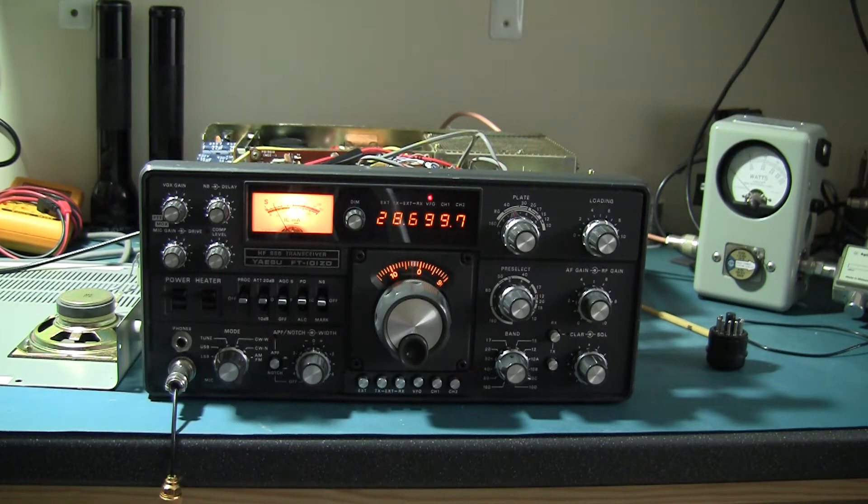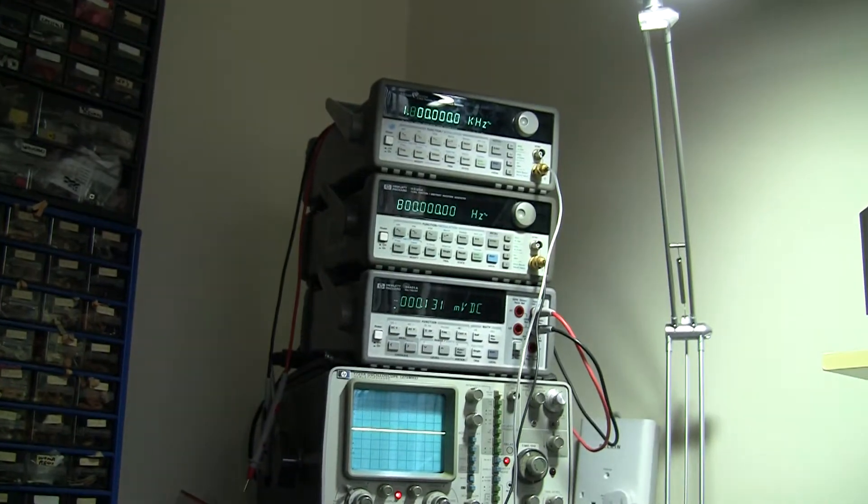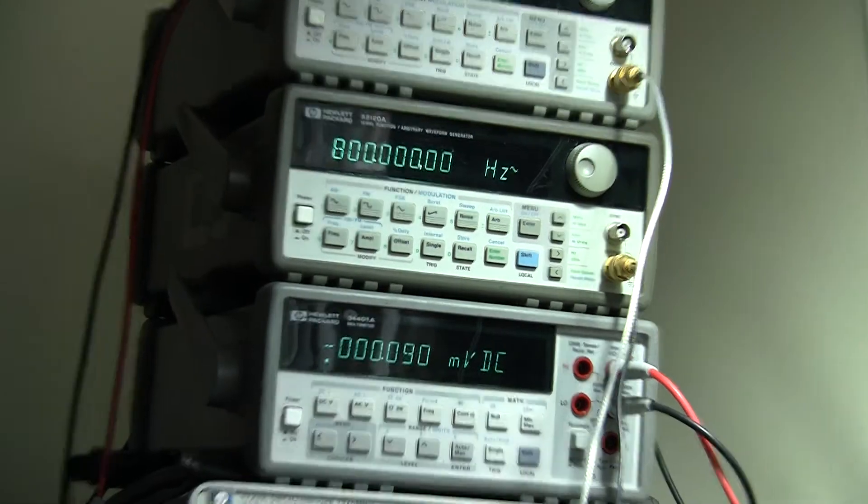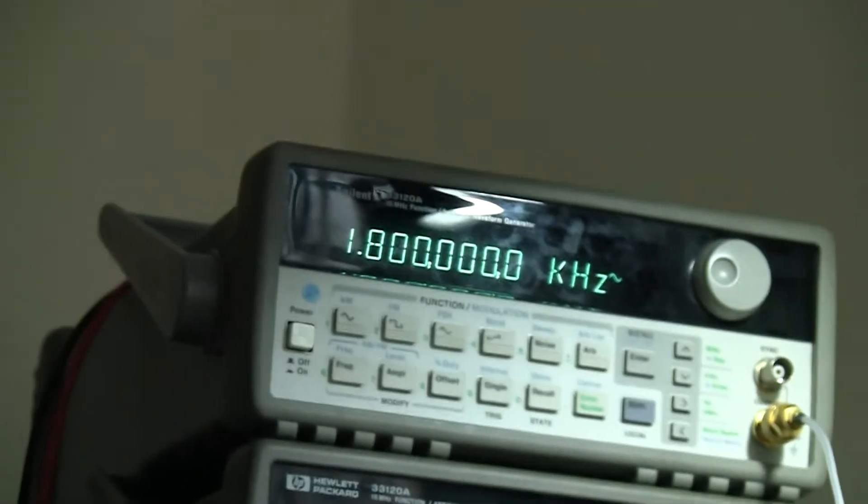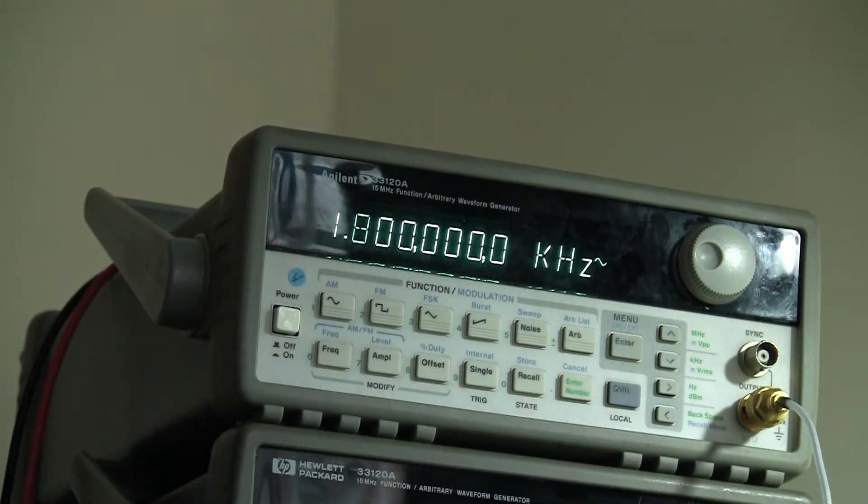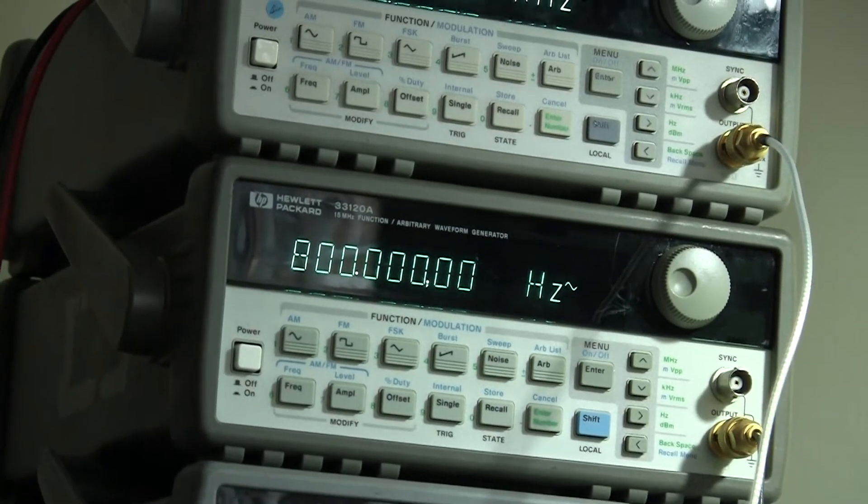Just to walk you through the test setup first. Starting at the input to the radio we have two-tone signal generation for two-tone testing. One tone is set to 1.8kHz, the other tone is set to 800Hz.